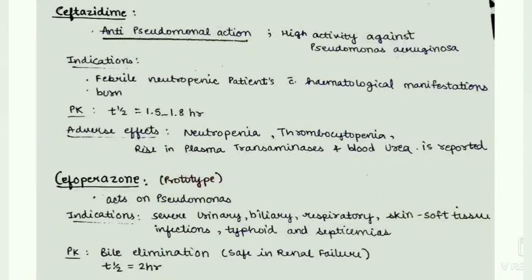Pharmacokinetics of ceftazidime: T-half is 1.5 to 1.8 hours. Adverse effects are neutropenia, thrombocytopenia, rise in plasma transaminases, and elevated blood urea.